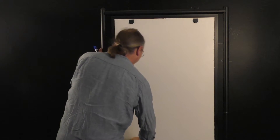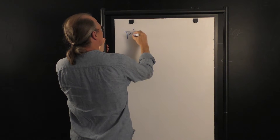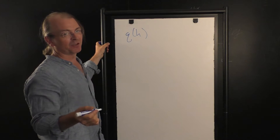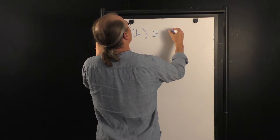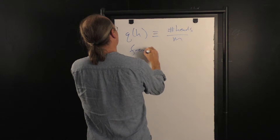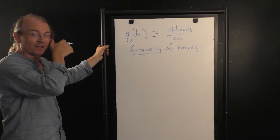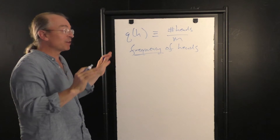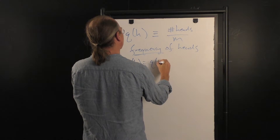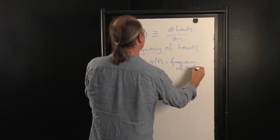Now we have a nice mathematical formula for this number. Let me define a probability — I'll call it Q — which is the frequency of heads: Q of heads equals the number of heads divided by m. This is the observed frequency of heads. And 1 minus Q of heads equals Q of tails, the frequency of tails. So Q represents what we observe to be the relative frequency — not necessarily a true probability, but a frequency.